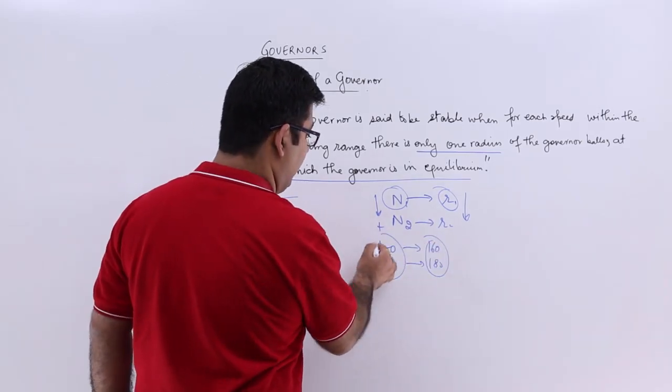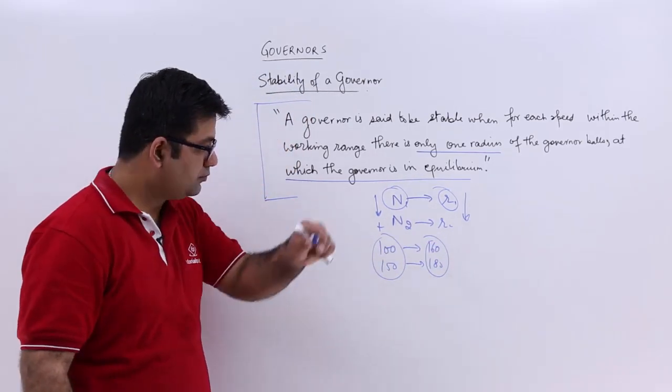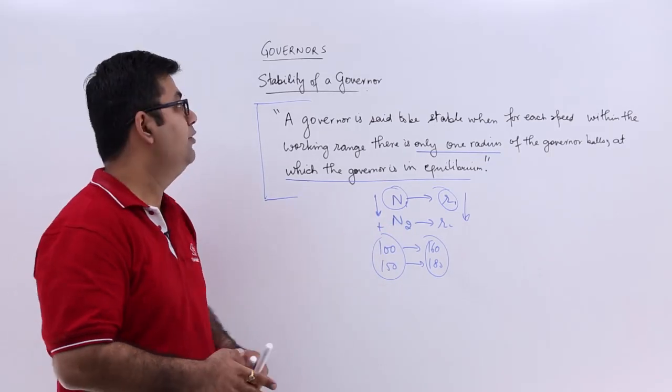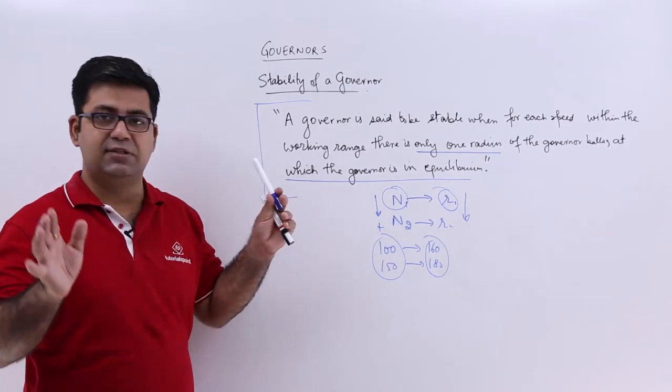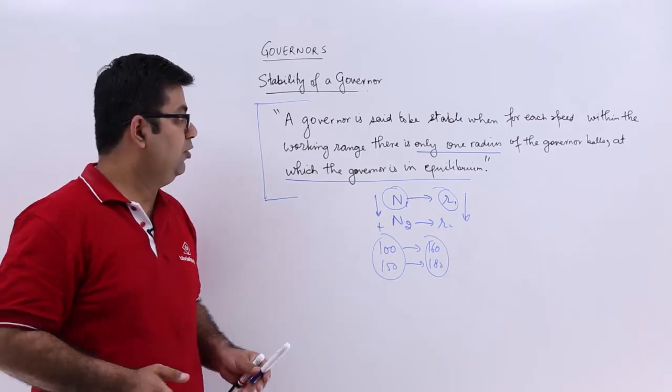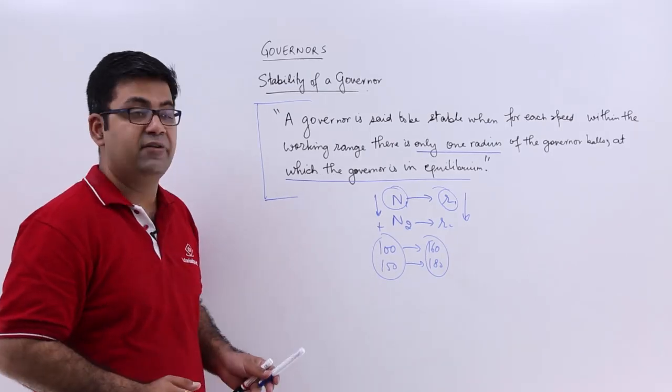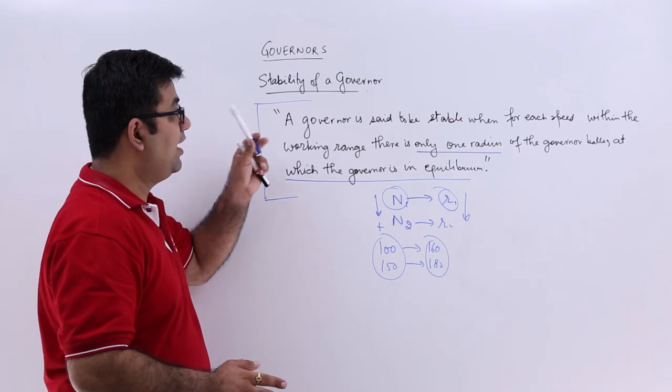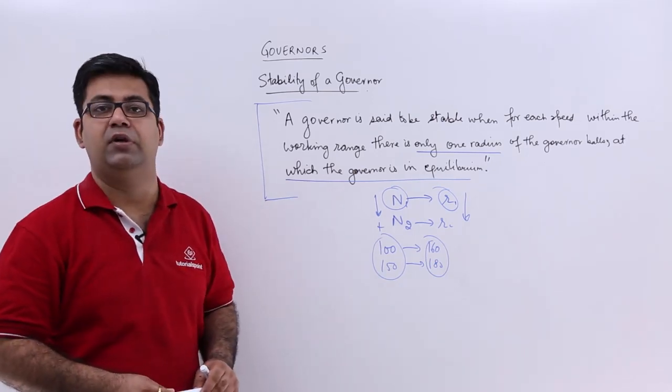So there will be a proportionate increase in the radius of rotation as well for a stable governor. This is just a term you need to remember and understand for the stability of a governor. After this, we will look at the isochronism in a governor.